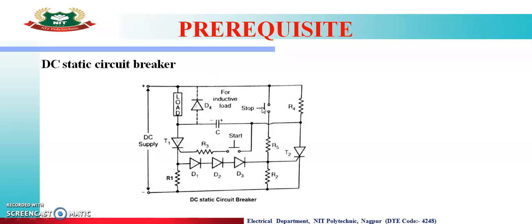When the Stop Button is pressed, current flows through the Stop Button, through R5, and through the gate of SCR T2. As gate current flows through T2, SCR T2 turns ON. As soon as T2 turns ON, the positive plate of the capacitor connects through T2 to the anode of T1, and the negative plate connects to the cathode of T1.